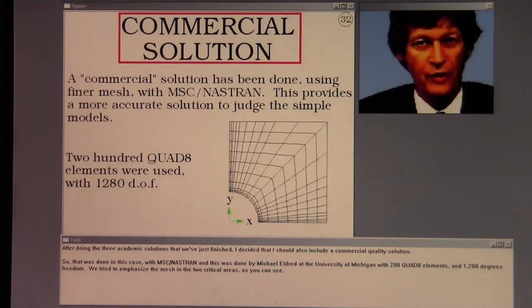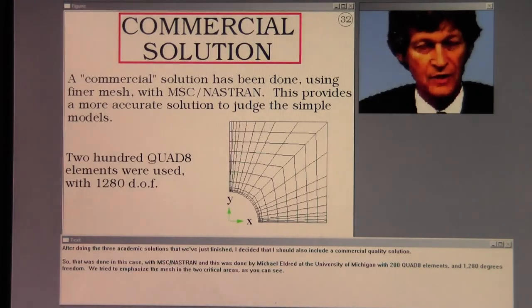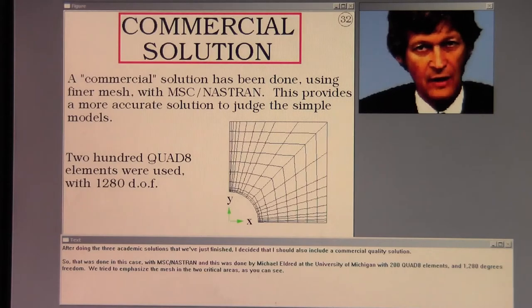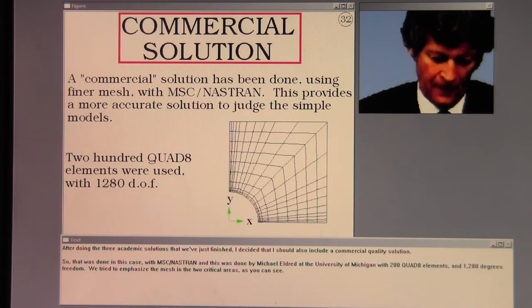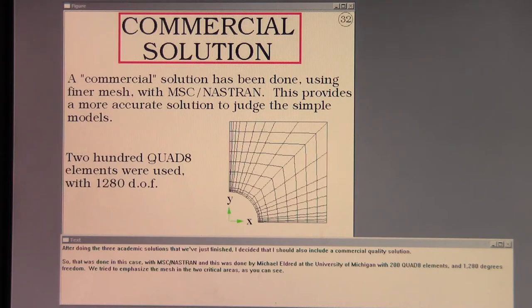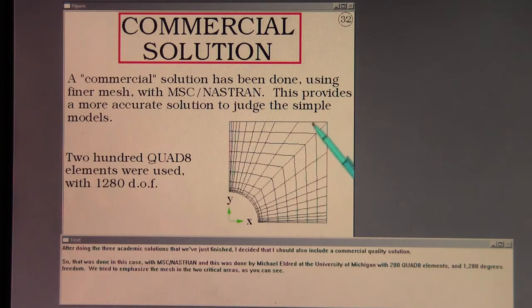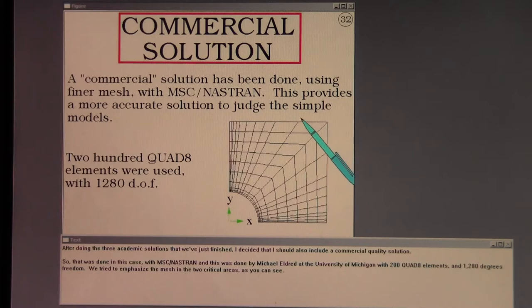After doing the three academic solutions that we've just finished, I decided that I should also include a commercial quality solution. So that was done in this case with MSC Nastran and this was done by Michael Aldred at the University of Michigan with 200 quad 8 elements and 1280 degrees of freedom. We tried to emphasize the mesh in the two critical areas as you can see.